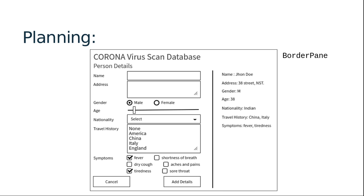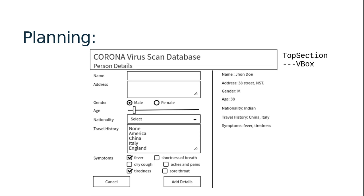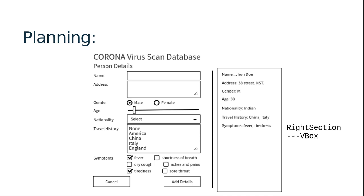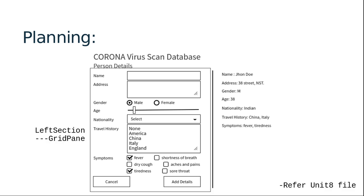We'll create a BorderPane and use its top section. Within that top section, we are going to add a VBox because we are having two texts one below the other — vertically placed. Similarly, we are going to use the right section of that BorderPane, which will again be a VBox because vertically we are going to place multiple texts there. And at last, we are going to use the left section of that BorderPane. That left section will have the GridPane. We will use a grid to organize all fields properly, with multiple rows and columns, placing all UI controls in a particular cell within the grid.